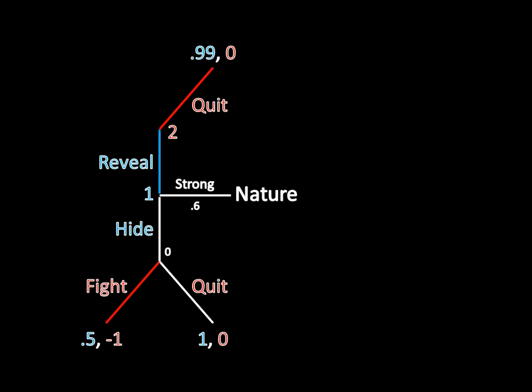So what we see here is that the strong type does not have a profitable deviation. If he follows his equilibrium strategy, he gets 0.99. If he hides, he gets a payoff of 0.5. 0.99 is better than 0.5 — Player 1 as the strong type is perfectly happy.